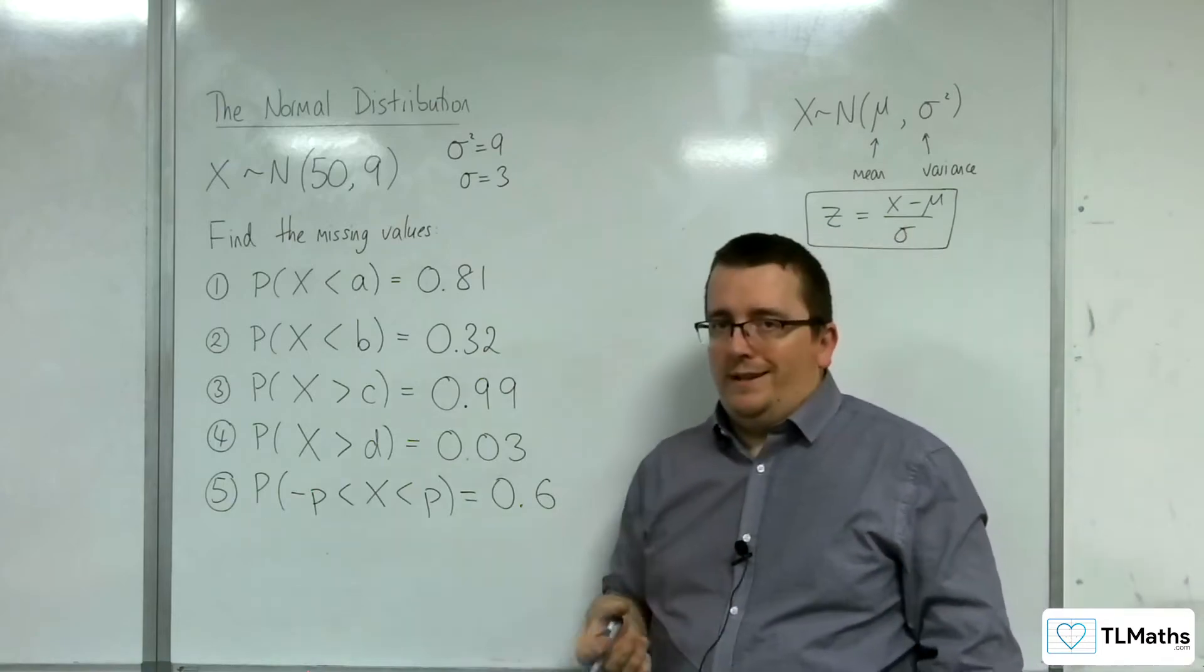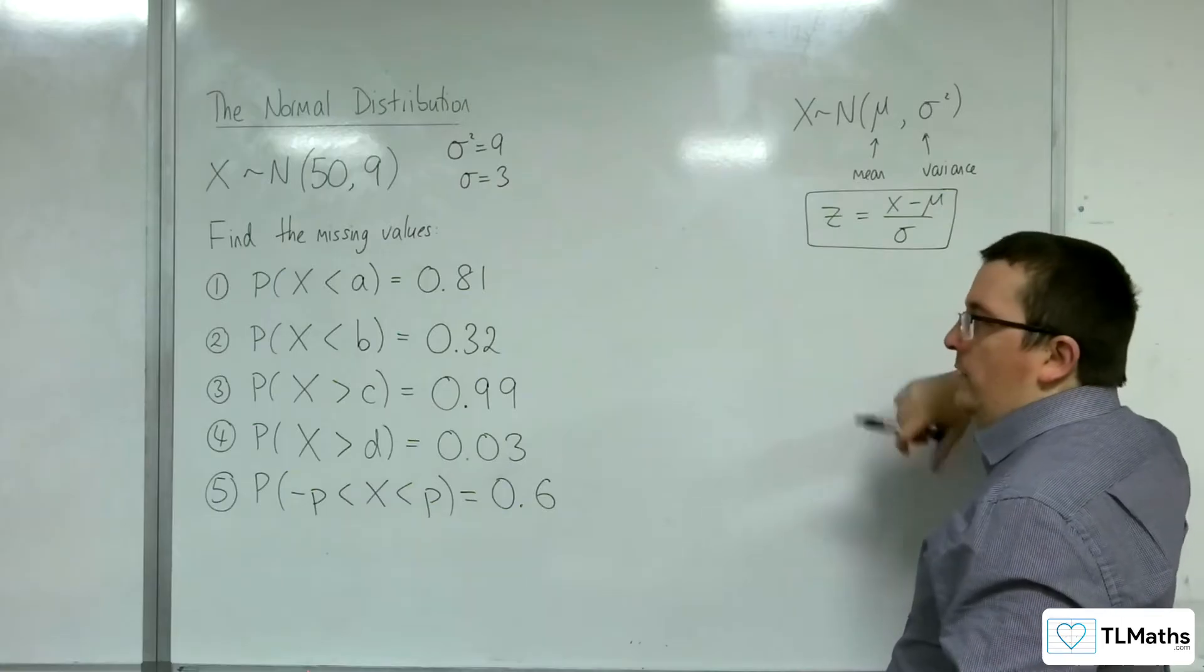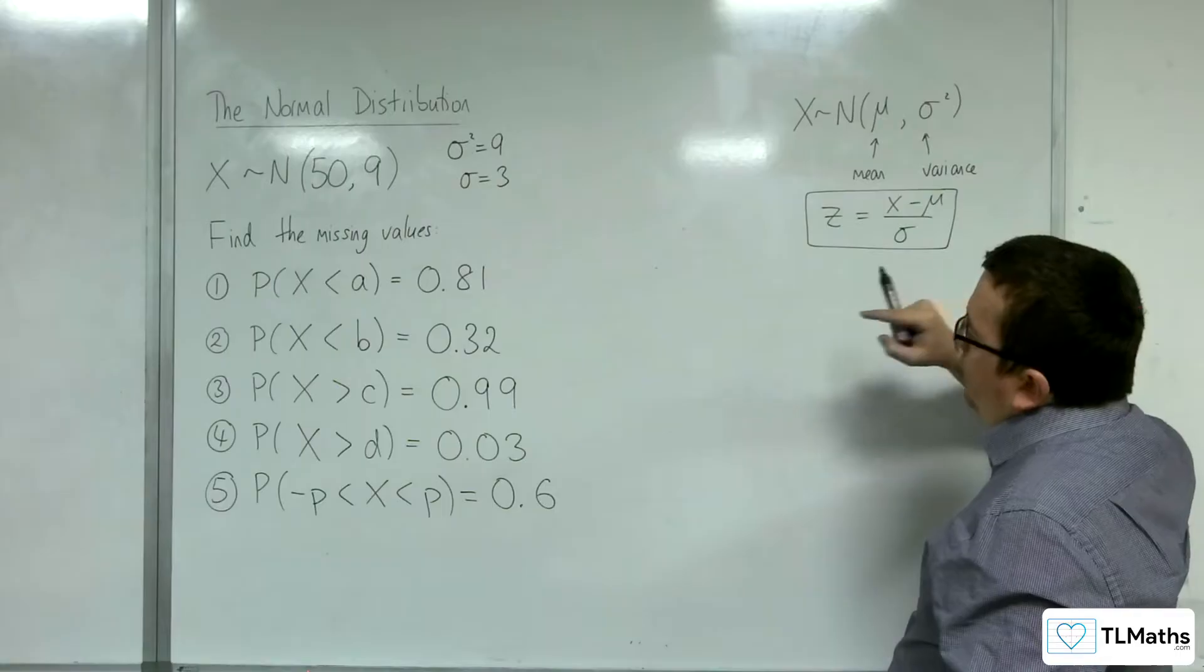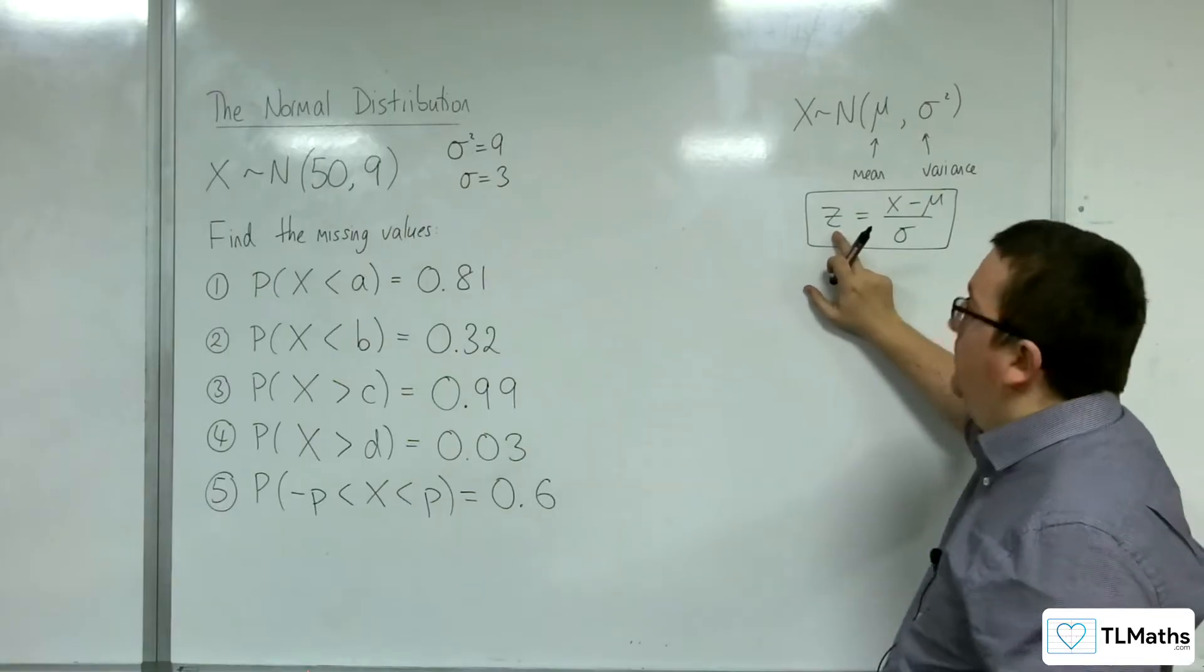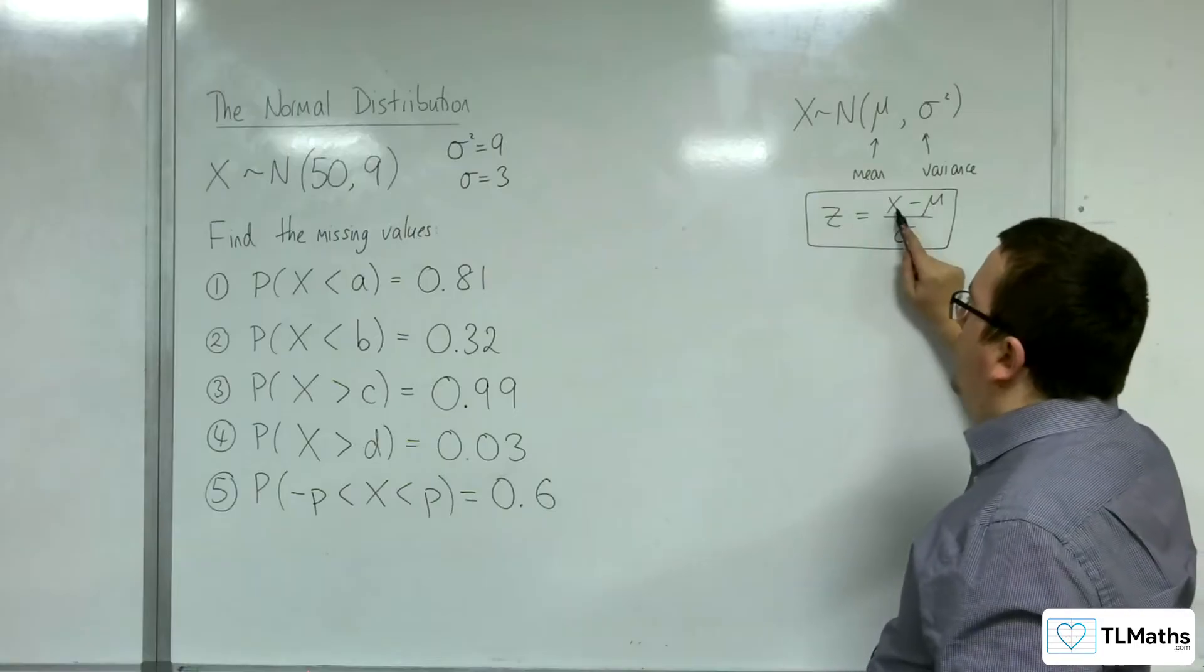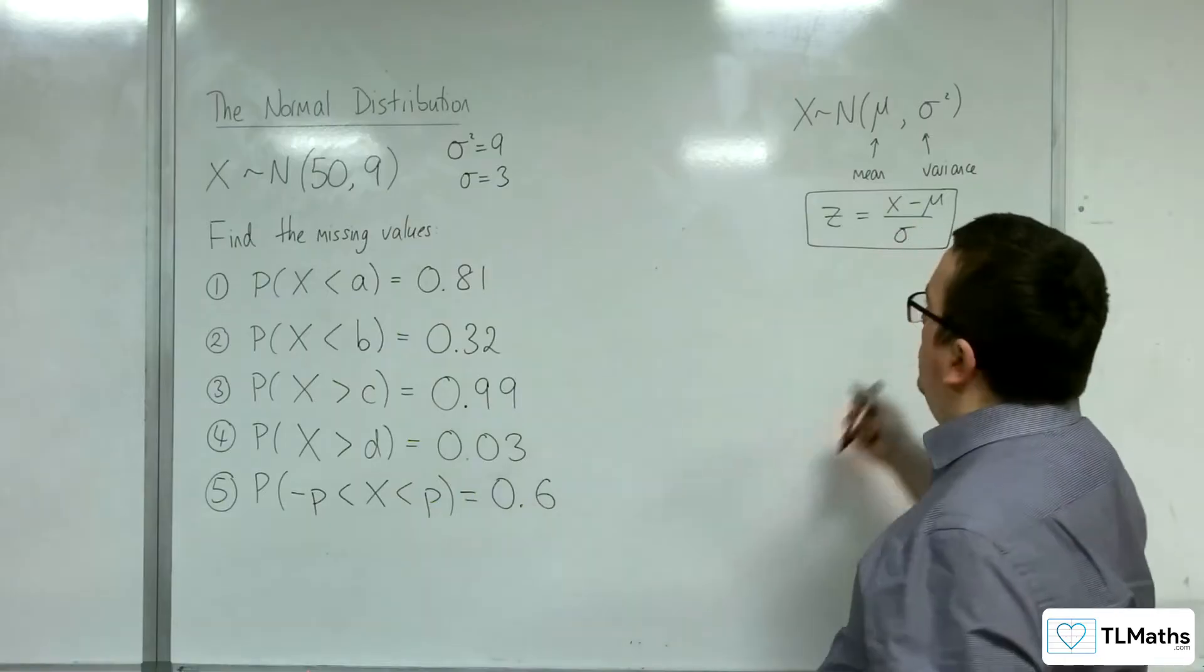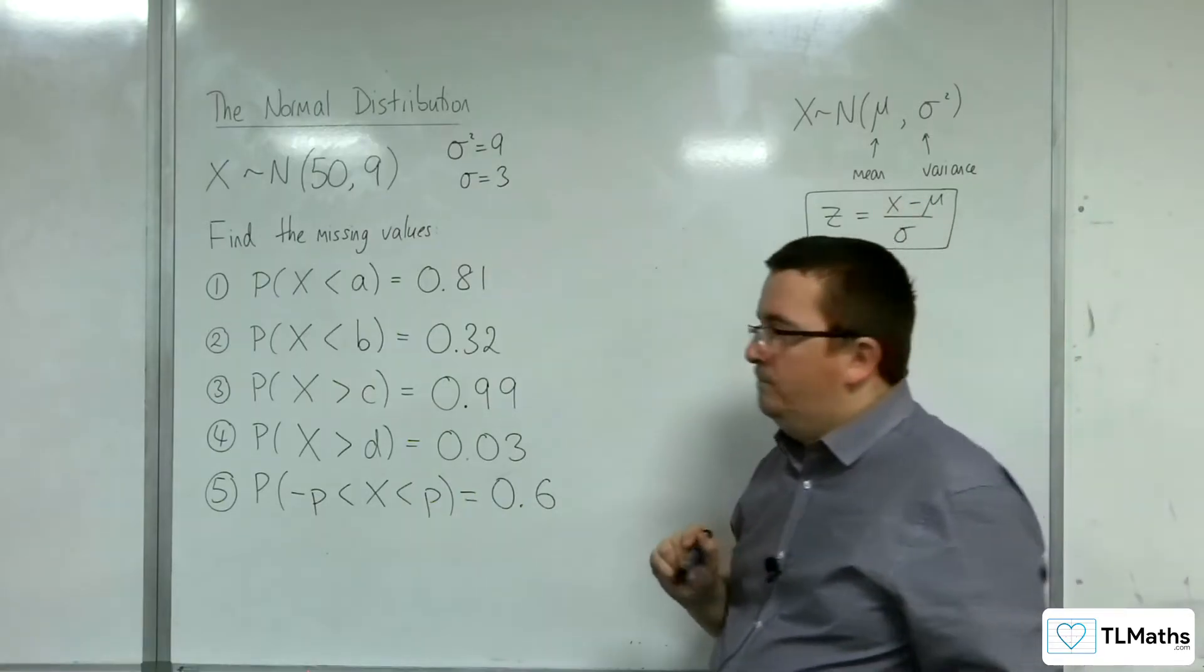So how do we deal with these? Well, in utilizing this formula, the idea is that from the information we are given, we need to find the value of z, which we can do using our tables. And the value of x here is actually the value of a. And so once we've got our value of z, we can plug it in here and work out the missing value.